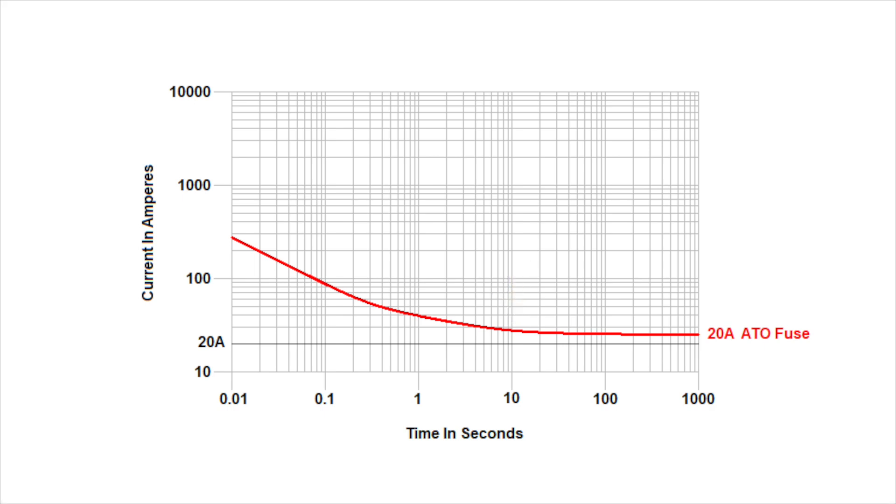And as the overcurrent increases, the time to blow becomes less. For example, on the left side of the chart, a 20 amp fuse can withstand almost 300 amps for up to 10 milliseconds before blowing.